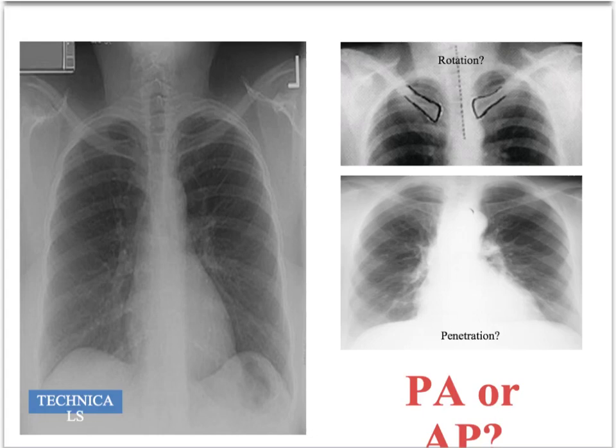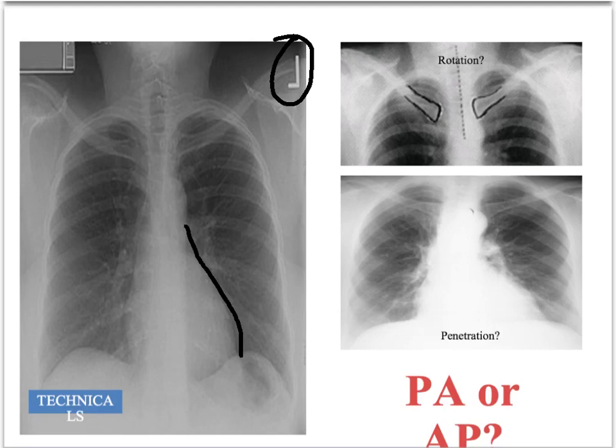Let's start with the technicals. There are a number of issues to concern ourselves with. First and foremost, is the chest X-ray the correct way around? The way to establish that is to look at the heart border. The heart will normally be on the left-hand side, as shown in this X-ray. The only exception is dextrocardia.